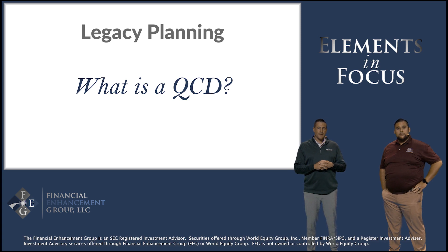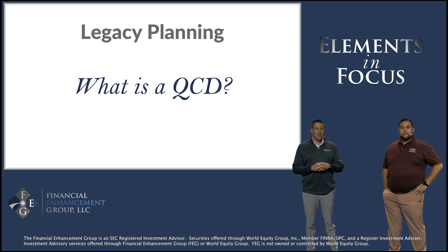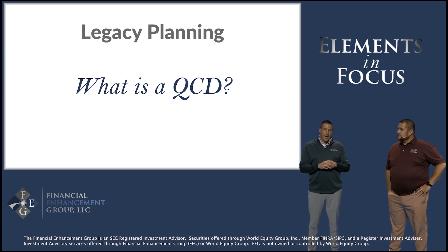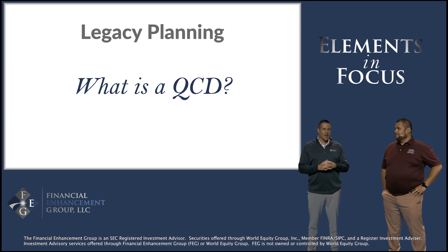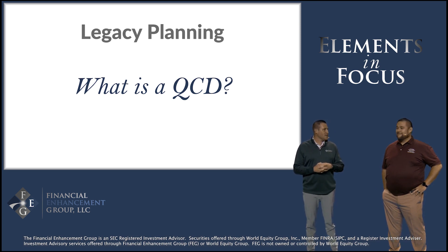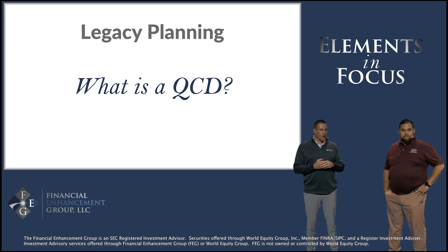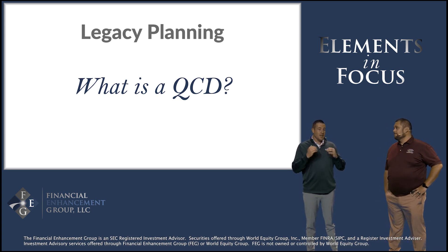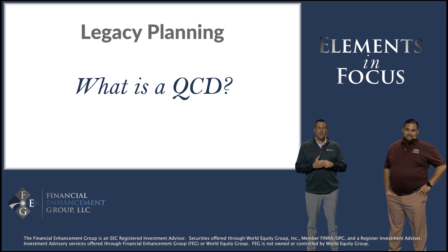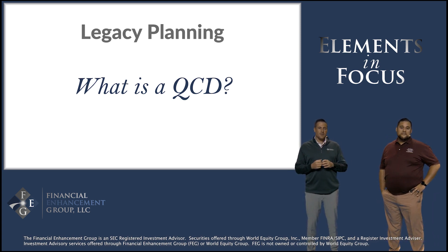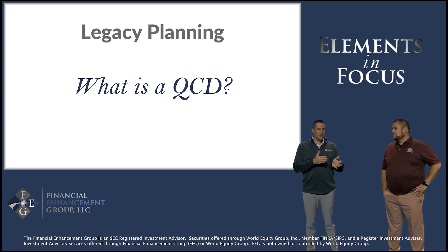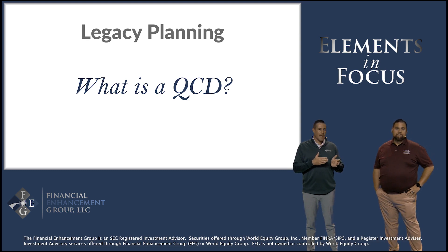A QCD stands for qualified charitable donation. It's a way to be able to gift a part of your required minimum distribution, starting at age 70 and a half. Today we're in 2022, the required minimum distribution age is 72; however, you can start your QCD at 70 and a half, and you do have to wait until 70 and a half before that begins. One of the benefits of doing the qualified charitable distribution is it takes away from your required minimum distribution balance over time.